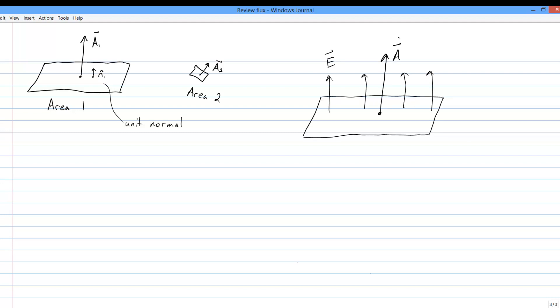Notice how that definition of the area vector plays nice with our flux definition. We get the maximum flux when the field lines are going straight through some area, which is to say the field lines are perpendicular to the area. But in that situation, the field lines are parallel to the area vector, meaning that the dot product of E and A is at a maximum.